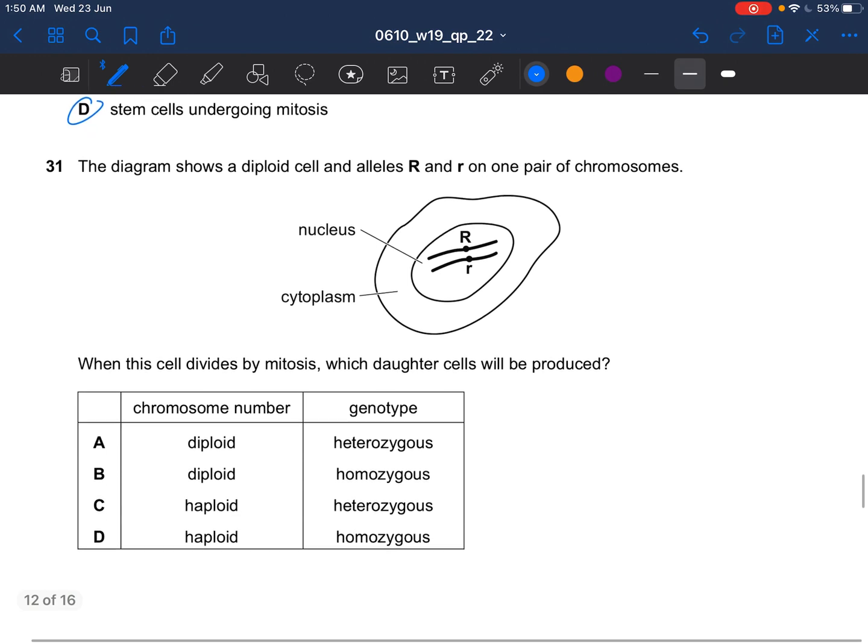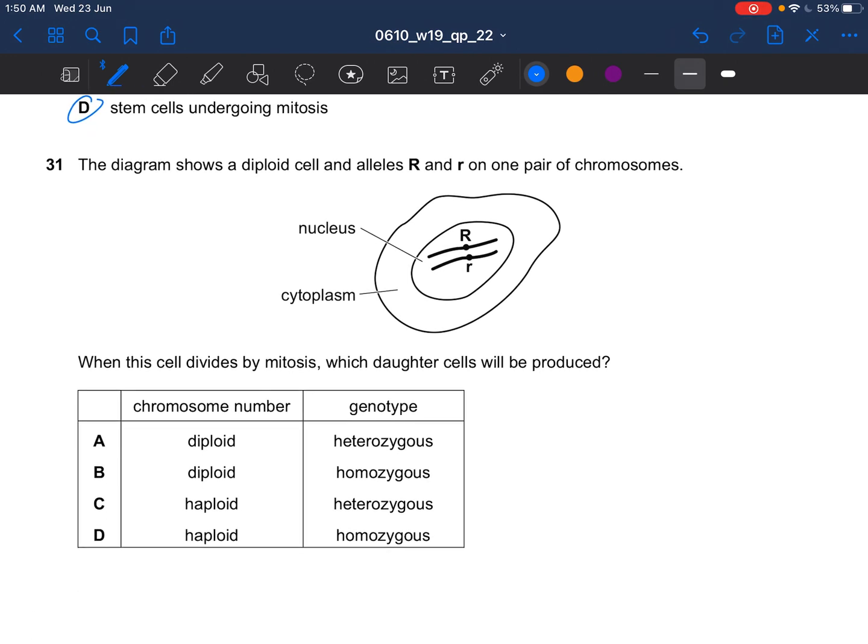Next question, the diagram shows a diploid cell and alleles R and r on one pair of chromosomes. When this cell divides by mitosis, which daughter cells would be produced? The daughter cells produced by mitosis will be genetically identical, and the chromosome number would remain the same. So diploid cell, this is heterozygous. So the answer would be A. Heterozygous means two different alleles. For homozygous, it's identical alleles.